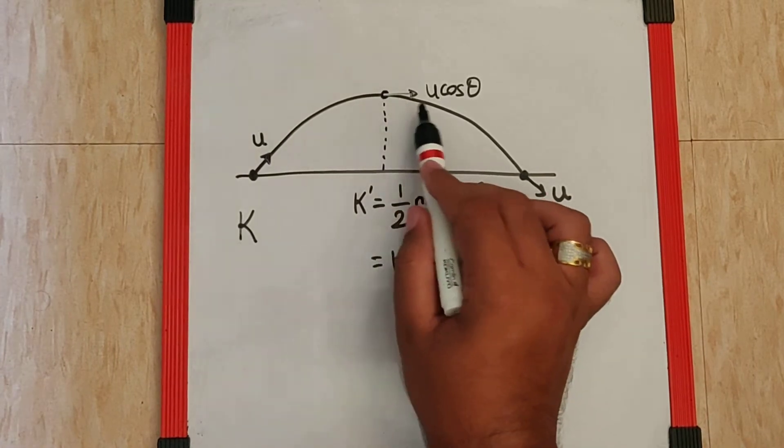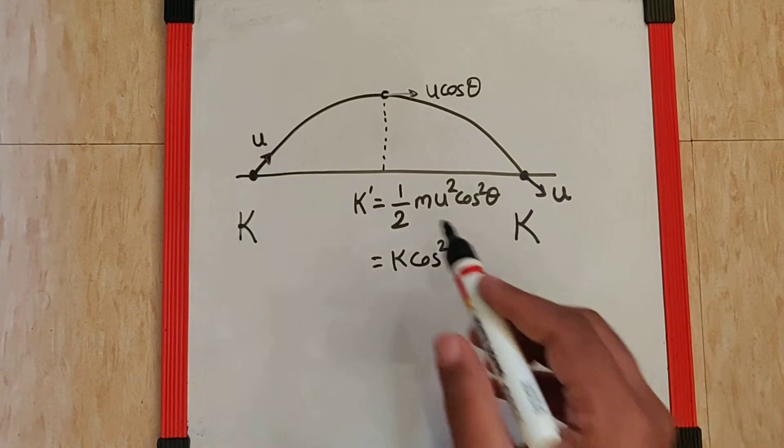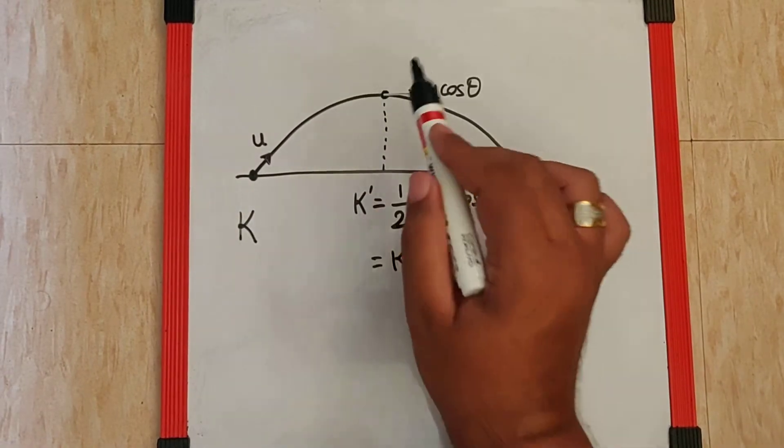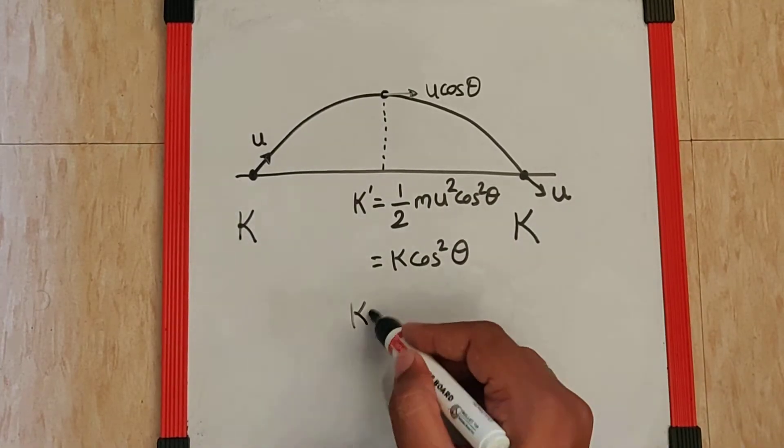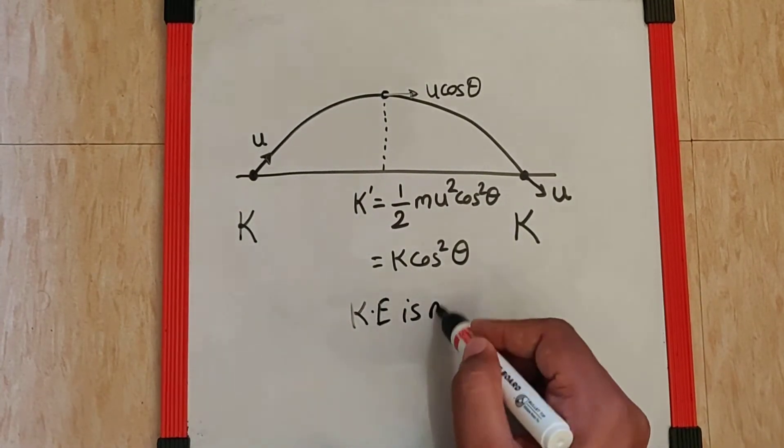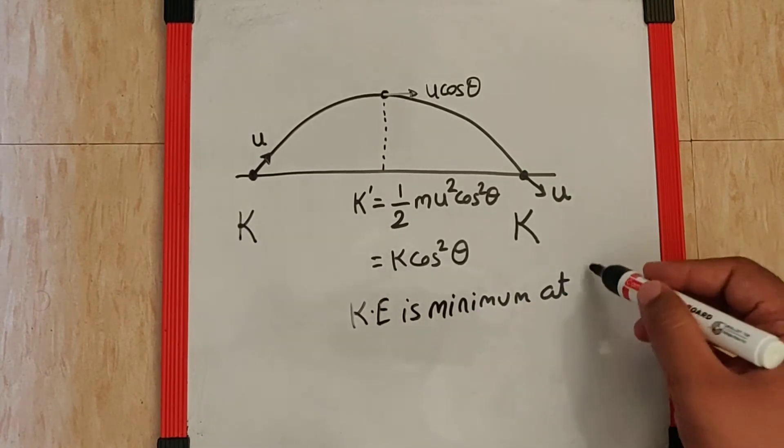comes into picture, increasing its velocity in terms of magnitude. So at the maximum height, the velocity is minimum, and therefore the kinetic energy is minimum at h_max.